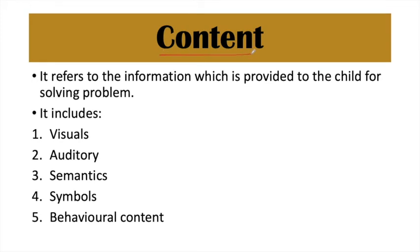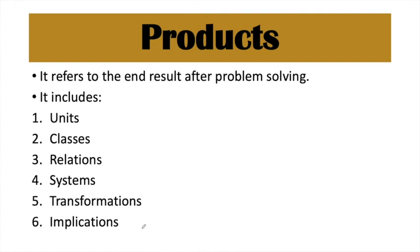The second parameter is content. Content means the type of information provided to the child for solving the problem. Content can include visuals — images shown to the child; auditory — spoken instructions given; semantics — the problem stated in words; symbols — symbols used; and also behavioral content.